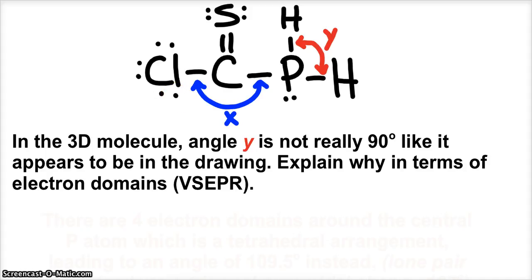And so when you look at this part of the molecule, okay, this is a larger molecule, and you can look through the eyes of different atoms. Right now, I'm focusing on the phosphorus because angle Y has to do with the phosphorus atom. So I'm going to look at the phosphorus atom as my central atom.